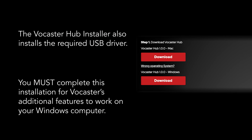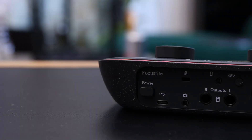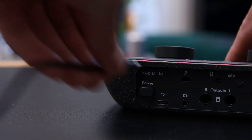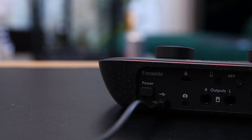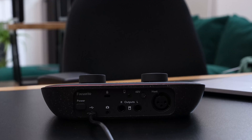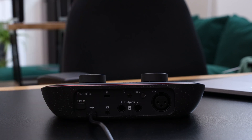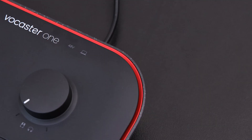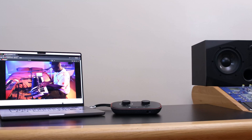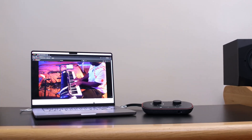Using the provided USB cable, connect one end to the back of your Vocaster and the other end to your computer. Next, turn your Vocaster on using the power button on the back panel. To ensure a connection has been made between your Vocaster and your computer, check that the computer icon is lit white.